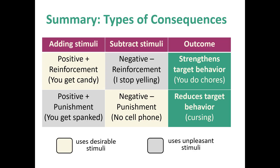We can break this down simply in terms of adding or removing: positive reinforcement is adding something desirable; negative reinforcement is removing something undesirable; positive punishment is adding something undesirable; negative punishment is removing something desirable. Make sure you're taking a look at the table here and review this video a couple of times, because this is one area where students often get confused.